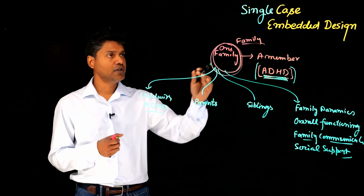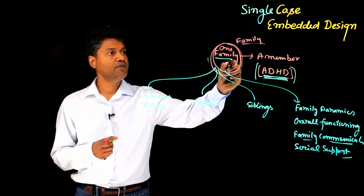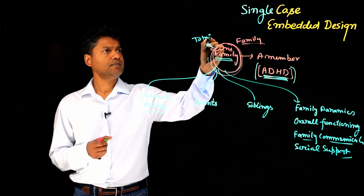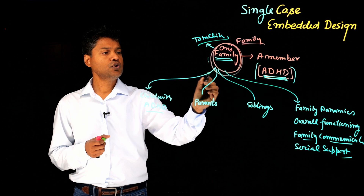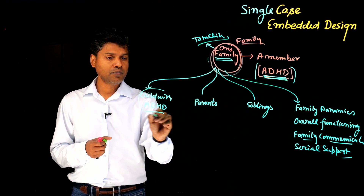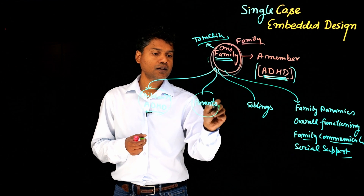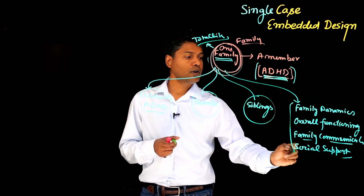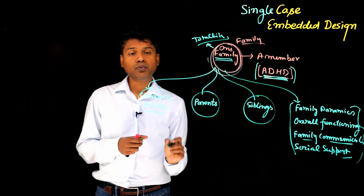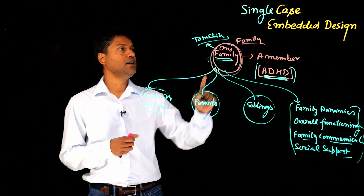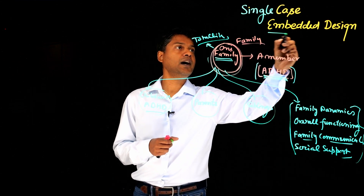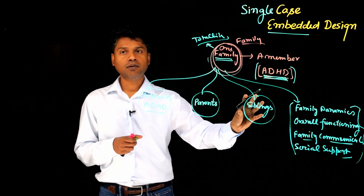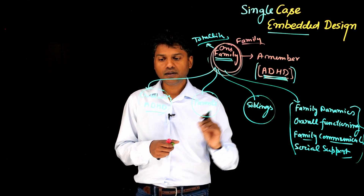So, the single case is one family, and within that one family I want to understand the overall experience — what it looks like when you have a family member diagnosed with ADHD, what are the experiences, and how the family copes. The case is one family. Within that one family, I want to understand this phenomenon in its totality, but I also want to focus on the subunits: the child with ADHD, the parents, the siblings if there are any, and overall family dynamics. So there are four subunits, and I can use single-case embedded design to explore this one case with multiple subunits.